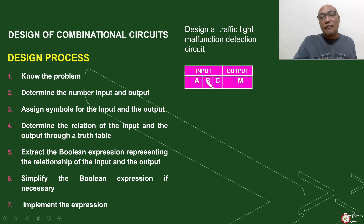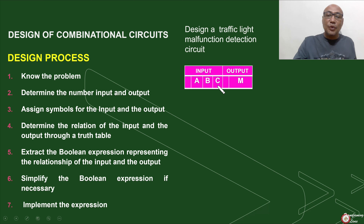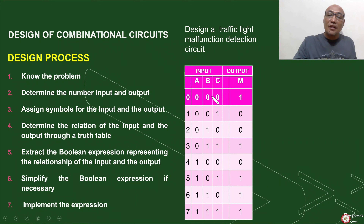We can now put a truth table. To put a truth table, we use the number of inputs: A, B, and C. With three inputs, how many possible combinations will we have? Using our equation 2 raised to n — that is, 2 raised to 3 — since we have three variables, there will be eight possible combinations, from 0,0,0 to 1,1,1.